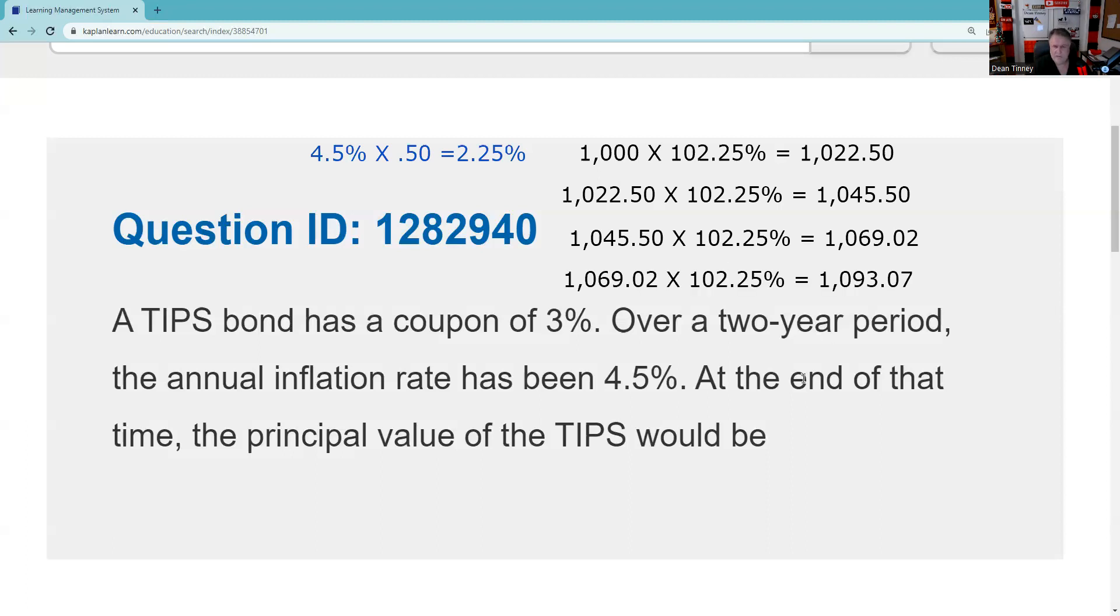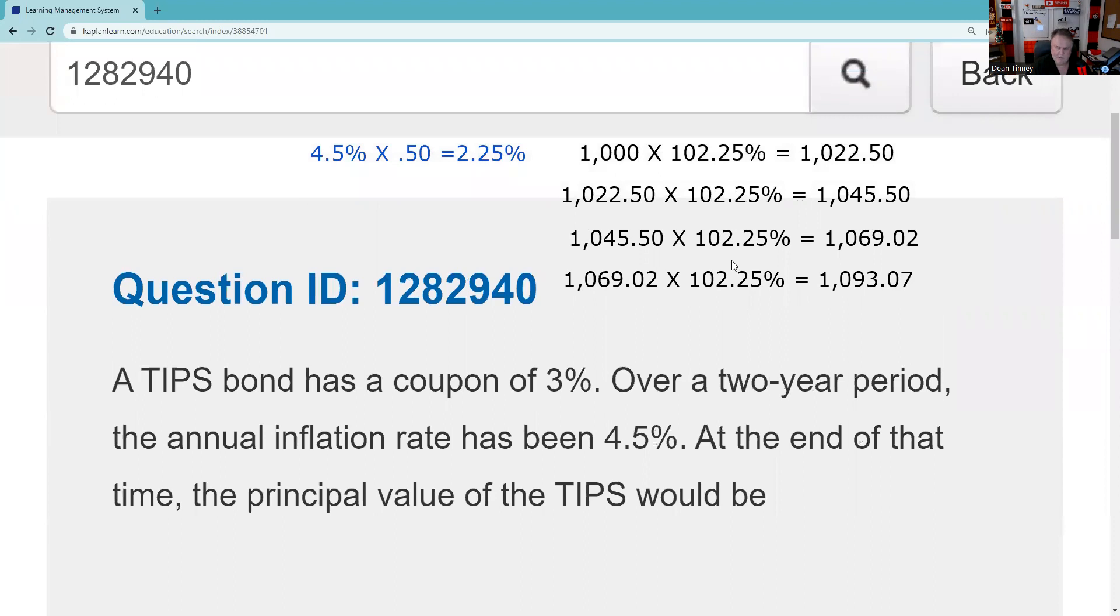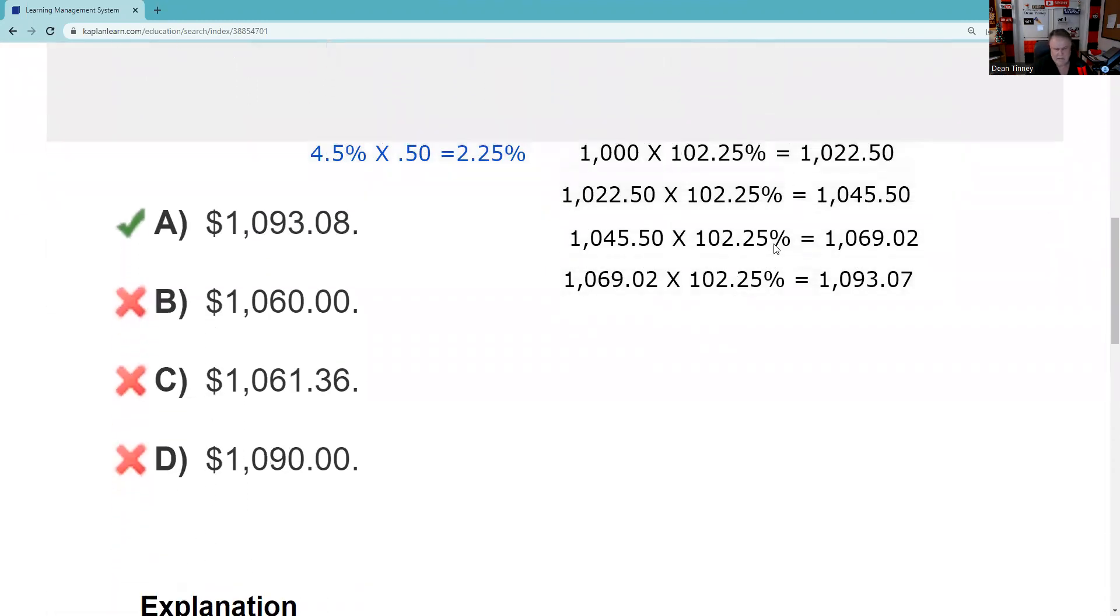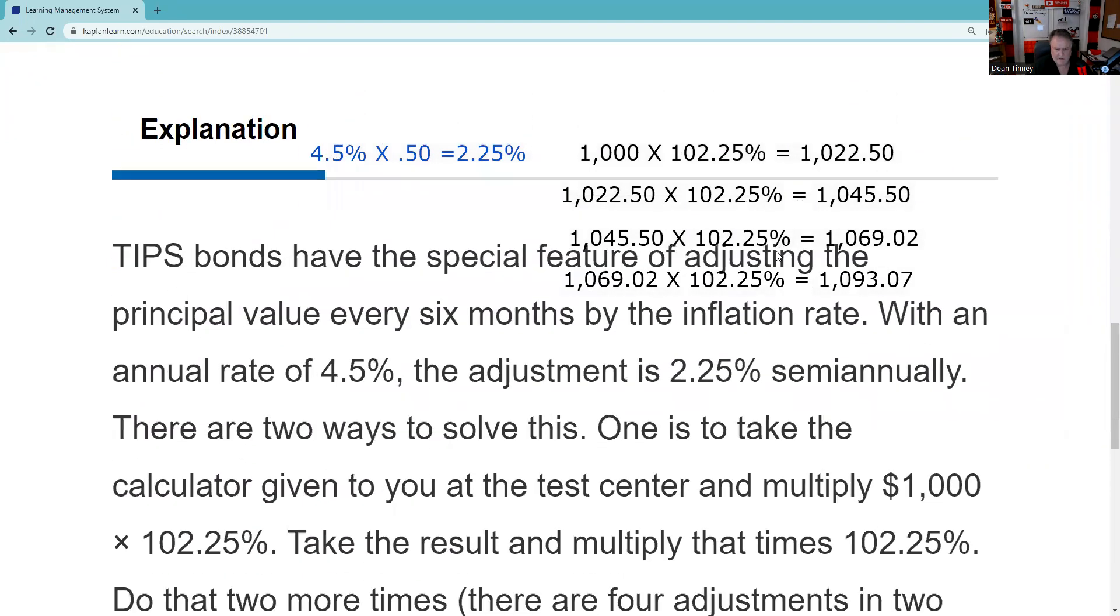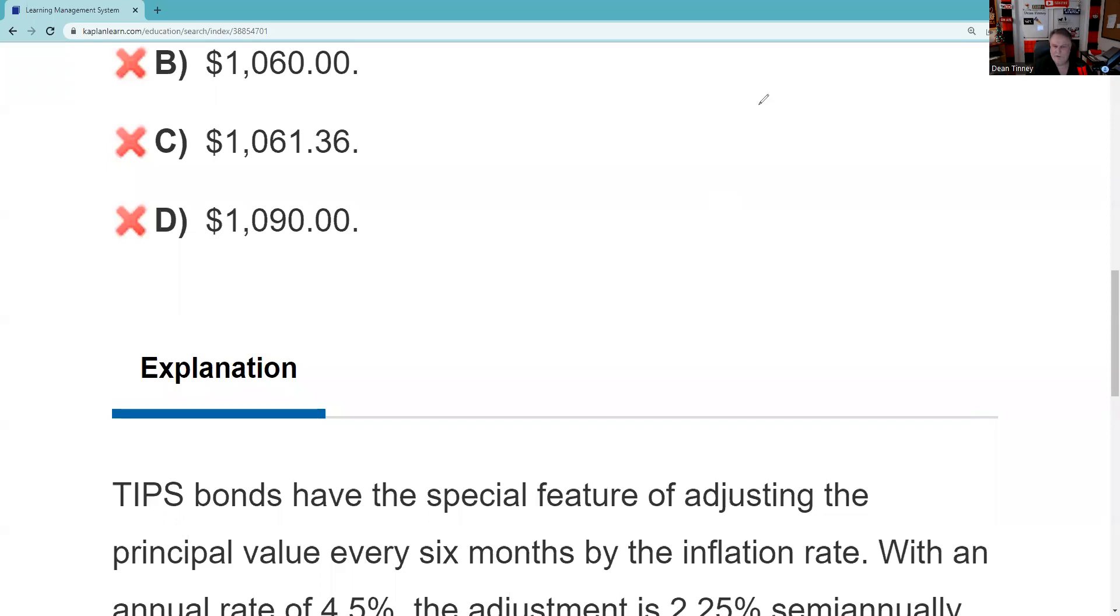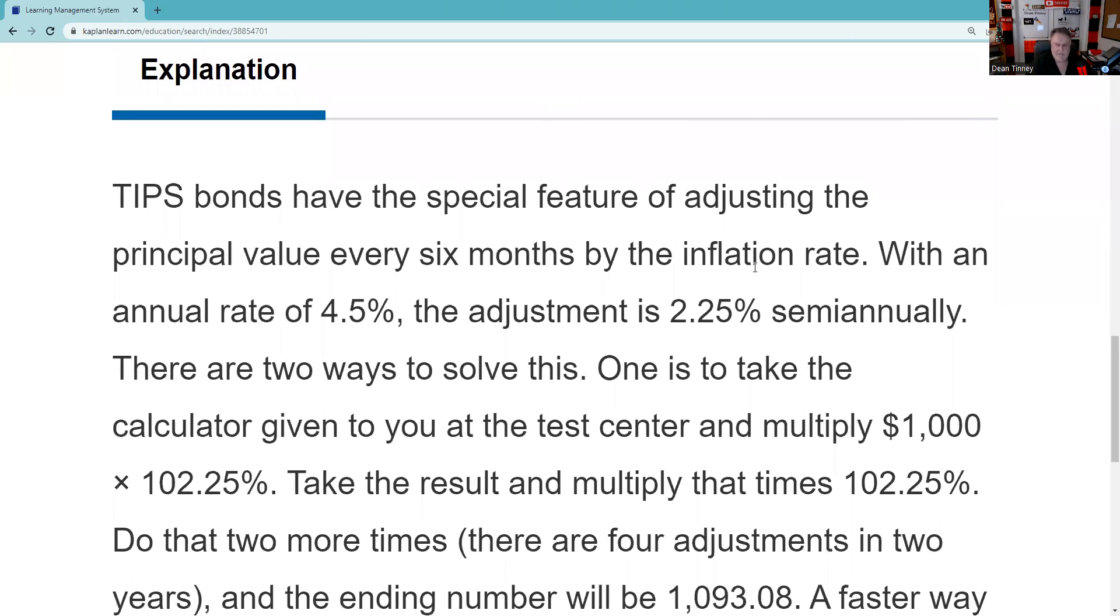And so let's see what answers are available to us. So boom, let's do the reveal. There we go. Like I said, I didn't round on mine. I wasn't too careful about the rounding. If I did it again and rounded a 5 to the 6, you know, it would come out. That'd be that. So there we go. And then, you know, the guy in charge of this, I guess the test taker didn't like this rationale. So let's just go over the rationale real quickly. TIPS bonds have a special feature of adjusting the principal every six months. That is testable. That's called compounding. It's going to compound by the inflation rate. So with an annual rate of 4.5%, the adjustment is half that, two and a quarter semi-annually.